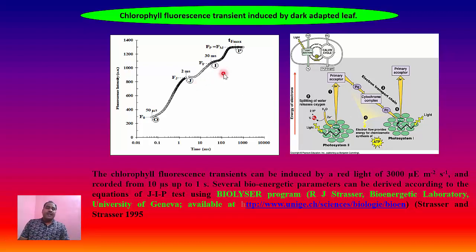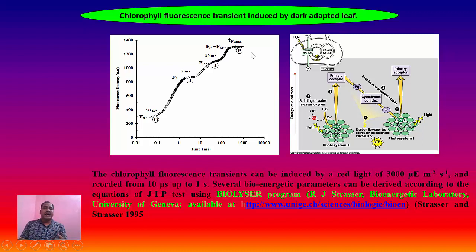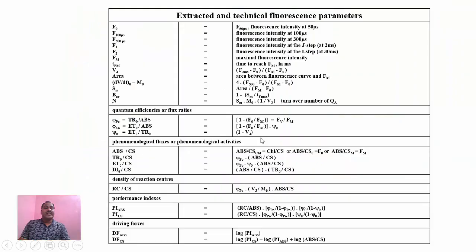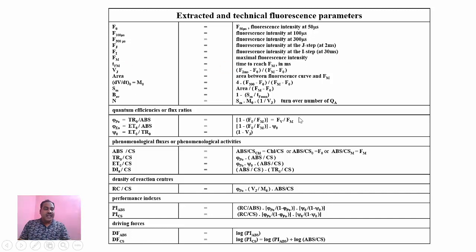The O-J-I-P transient is directly related to the electron transport system seen in the chloroplast. From these transients, different types of parameters can be extracted, including minimum fluorescence, maximum fluorescence, and another important parameter known as Fv/Fm, which is the maximum photochemical efficiency of PS2. We can extract different types of technical parameters from these chlorophyll fluorescence transients.